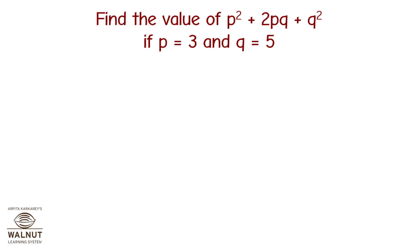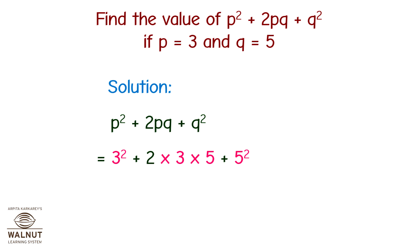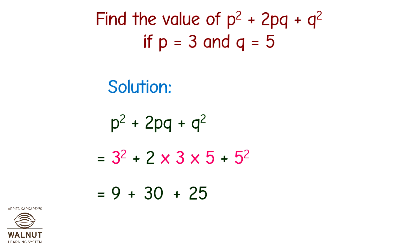Find the value of p raised to 2 plus 2pq plus q raised to 2, if p is equal to 3 and q is equal to 5. We have two variables p and q, and the expression is p² plus 2pq plus q². Putting the values: 3 raised to 2 plus 2 into 3 into 5 plus 5 raised to 2 equals 9 plus 30 plus 25 which is equal to 64, and that is the answer.